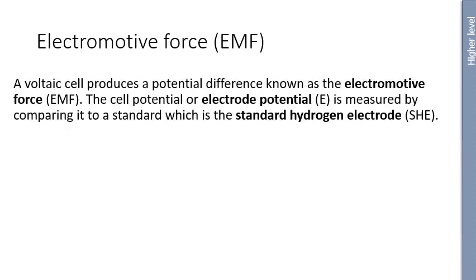The first thing we're going to look at is cell potentials. This is a little bit of physics — electromotor force, or EMF. A voltaic cell, which we looked at previously, produces a potential difference known as an EMF. The voltage is essentially the electromotor force. The cell potential, or electrode potential E, is measured by comparing it to a standard known as the standard hydrogen electrode, or SHE.